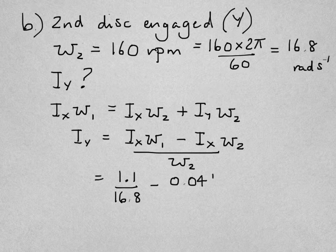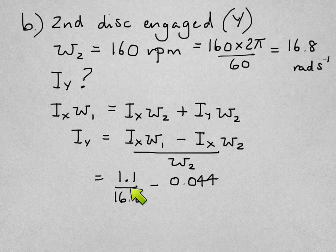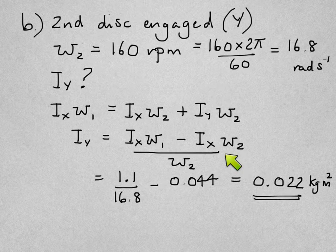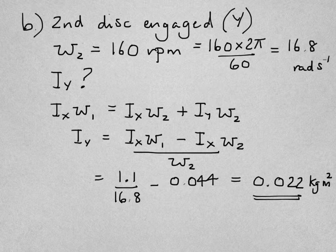Put all the numbers in. I × ω₁ which we've already worked out in part A is 1.1, divide by ω₂ which was 16.8, minus I_X is 0.044. The ω₂'s cancel out in the second term, so if we work that out we get 0.022 kilogram meters squared. That's the answer to part B.